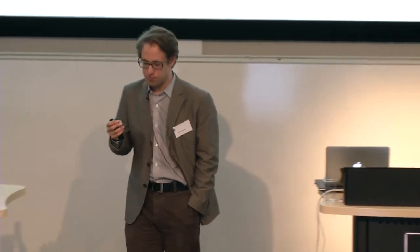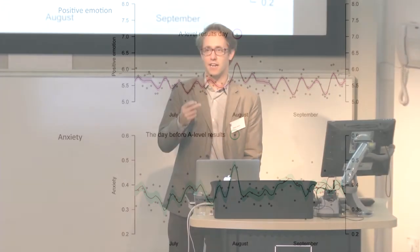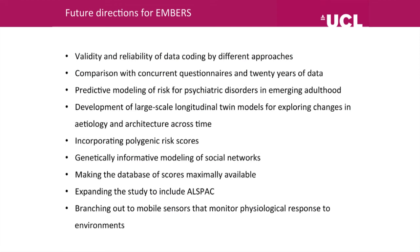We also get the negative events you'd expect — the highest negative event from last year was a terrorist attack in South East London. Zooming in on A-level results day, there's a positive emotion peak — perhaps unsurprisingly, since people who didn't get the results they wanted weren't tweeting about it. But if we look at the anxiety trace, the most anxious point of the whole year was the day before A-level results day. So it looks like we have a vast database of real-time, ecologically valid information we can use to understand genetic and environmental influences on mood across emerging adulthood.